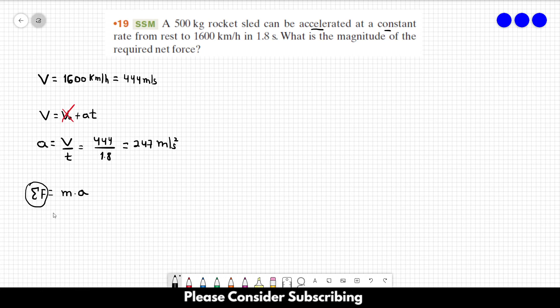All we have to do is multiply the mass of the rocket sled to its acceleration. So the net force is equal to 500 times 247, and this gives us about 1.2 times 10 to the 5 newtons. And this is the answer of exercise 19.